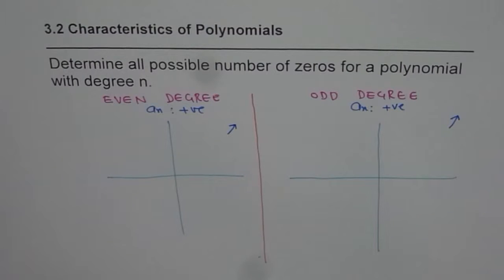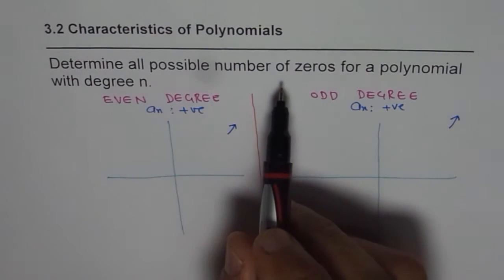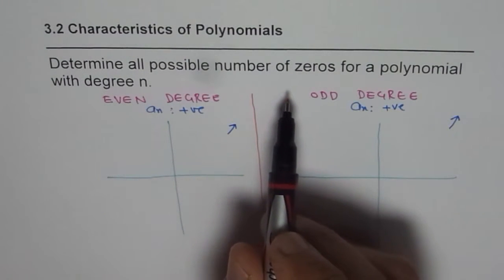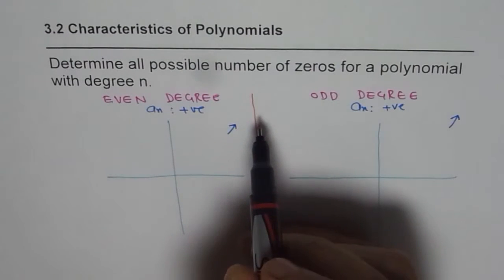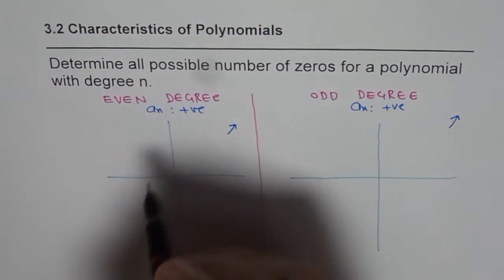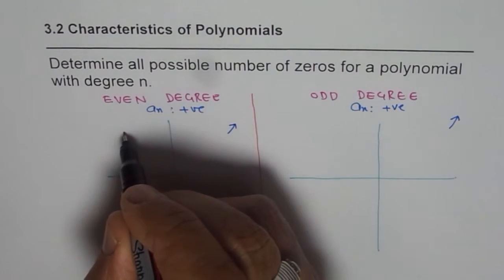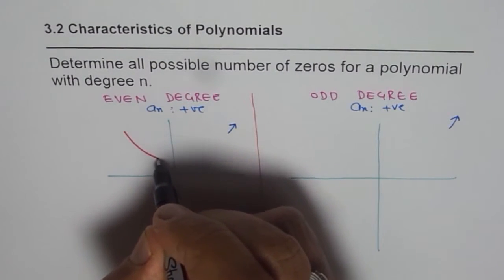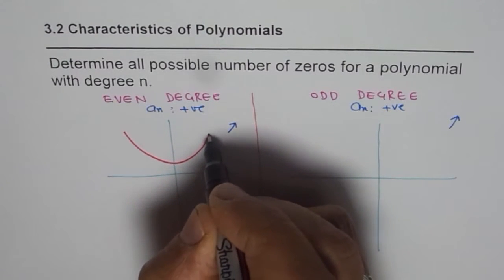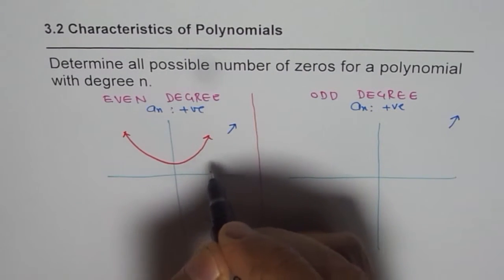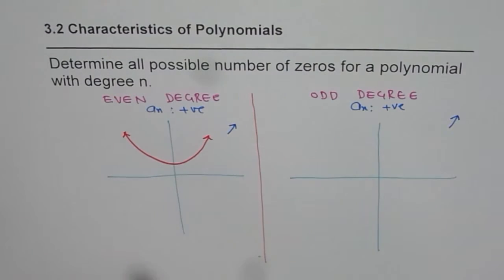Now if I have an even degree polynomial, how many zeros are possible? Let's consider a parabola, a very simple even degree polynomial. A parabola is degree two. You can draw a parabola like this - x squared plus one. How many zeros? None. Zero.